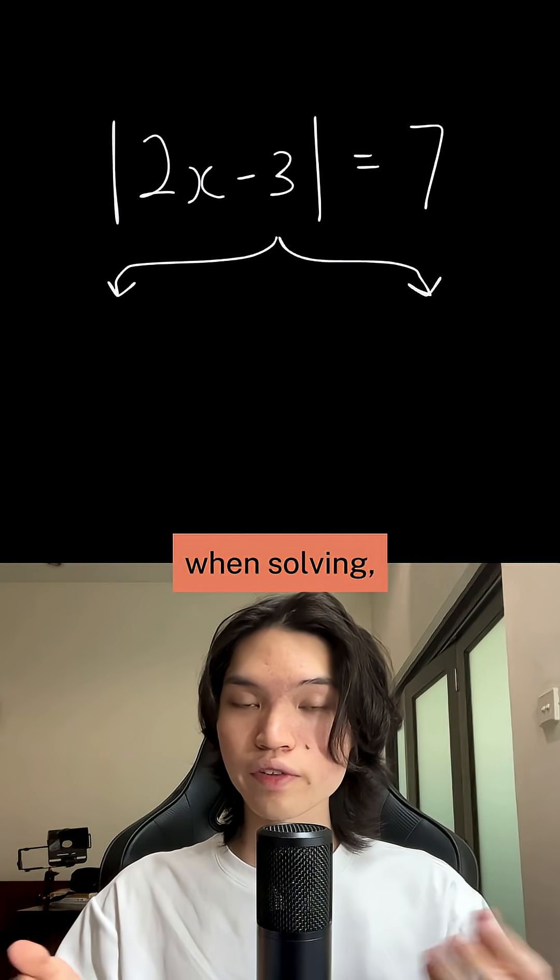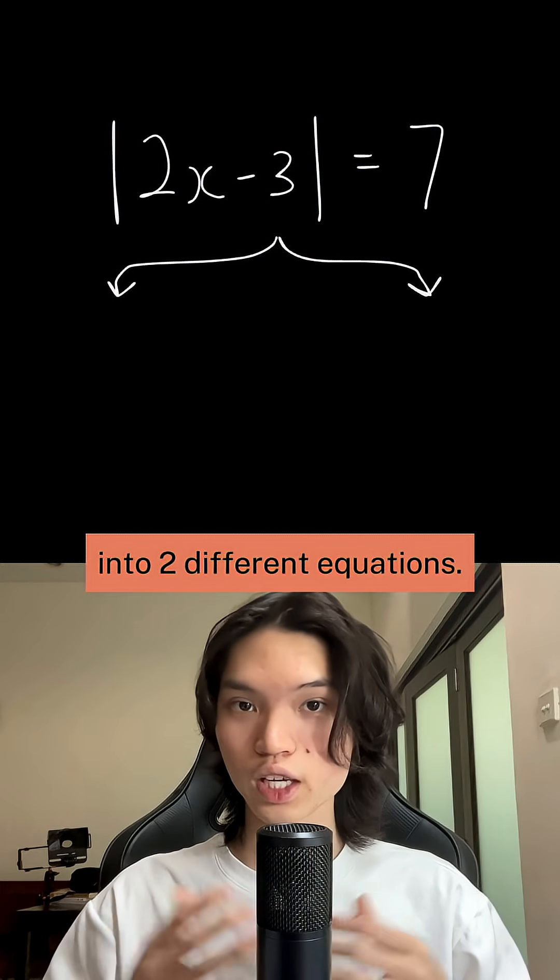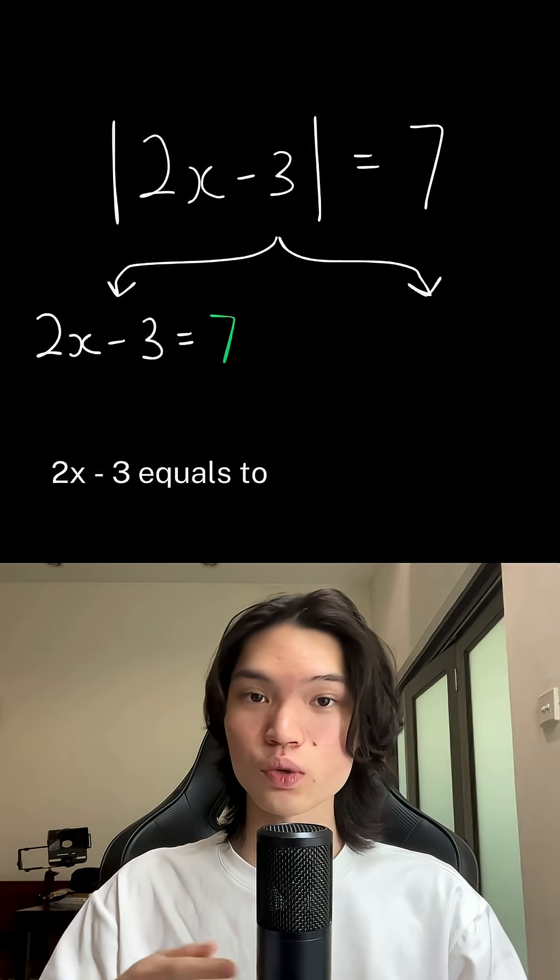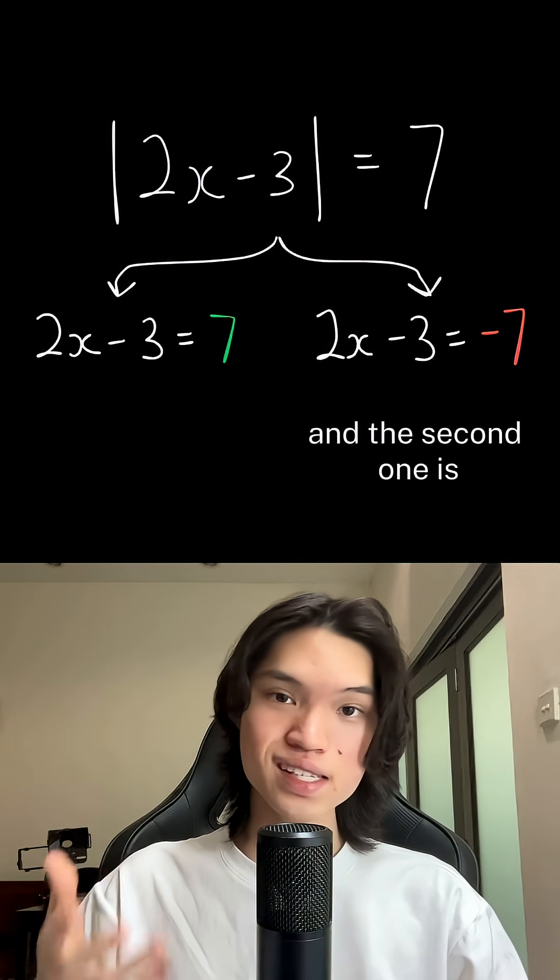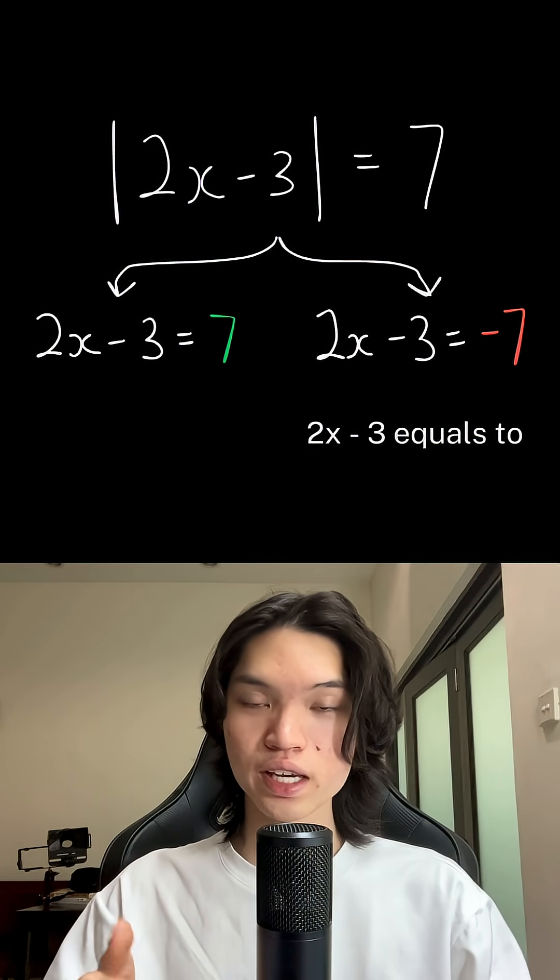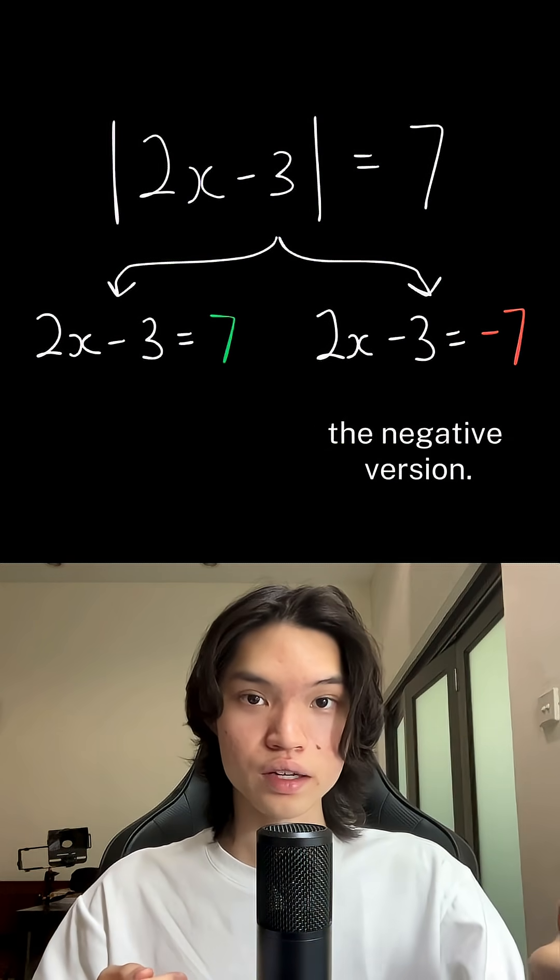To account for this when solving, we'll split it up into two different equations. The first is 2x minus 3 equals positive 7 and the second one is 2x minus 3 equals negative 7, the negative version.